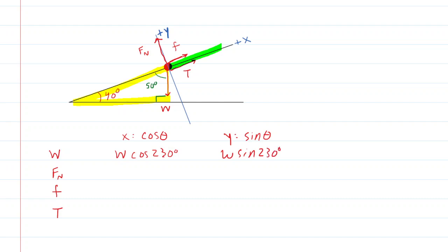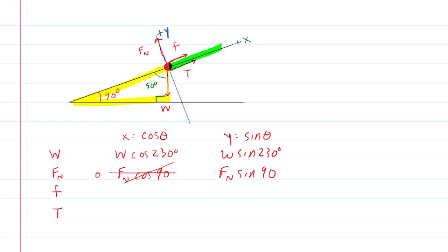We next look at the normal force. The angle between the positive x-axis and the normal force is just 90 degrees. So we have Fn times cosine 90, and Fn times sine 90. The cosine of 90 is 0, so the x component goes to zero. The sine of 90 is 1, so Fn times 1 is just Fn. We can simplify those terms — sometimes you can simplify your forces in that manner.